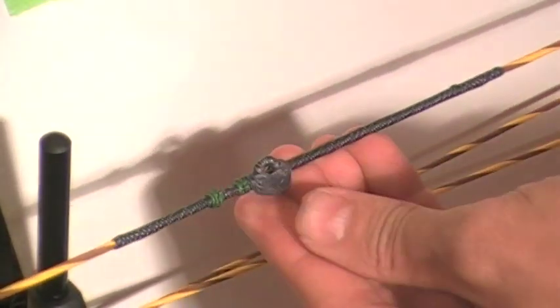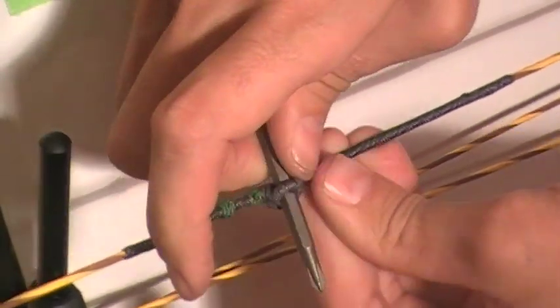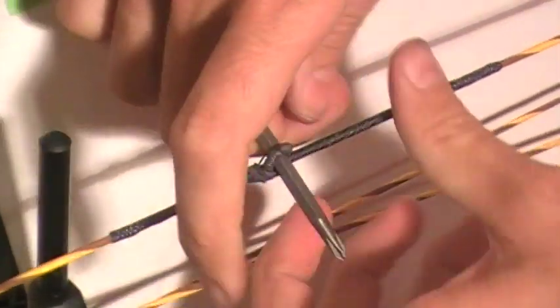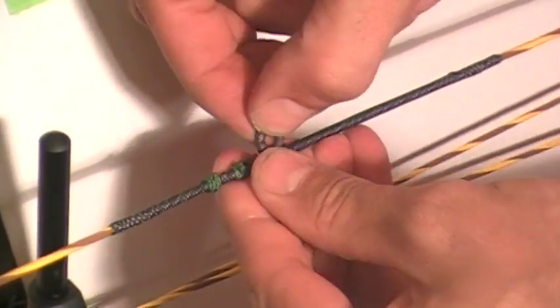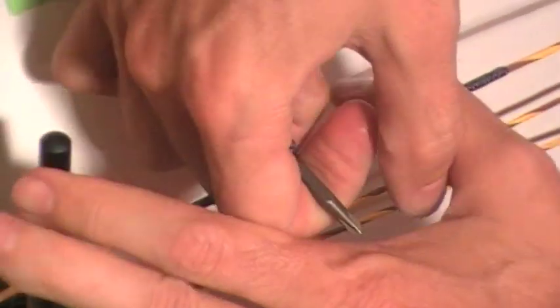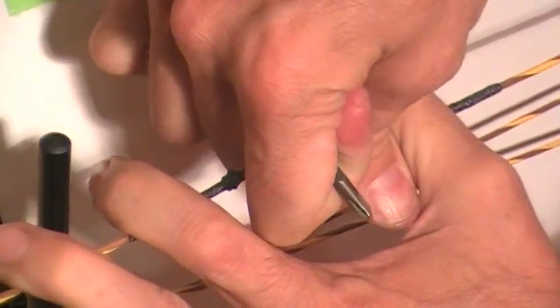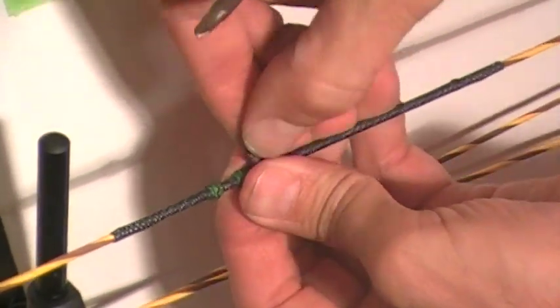As we get it through a little ways, we'll take a small screwdriver and put it through the loop. Pull it tight, just a little part of the loop there. Get it cinched down. Pull it nice and tight and push it up against the nock set.